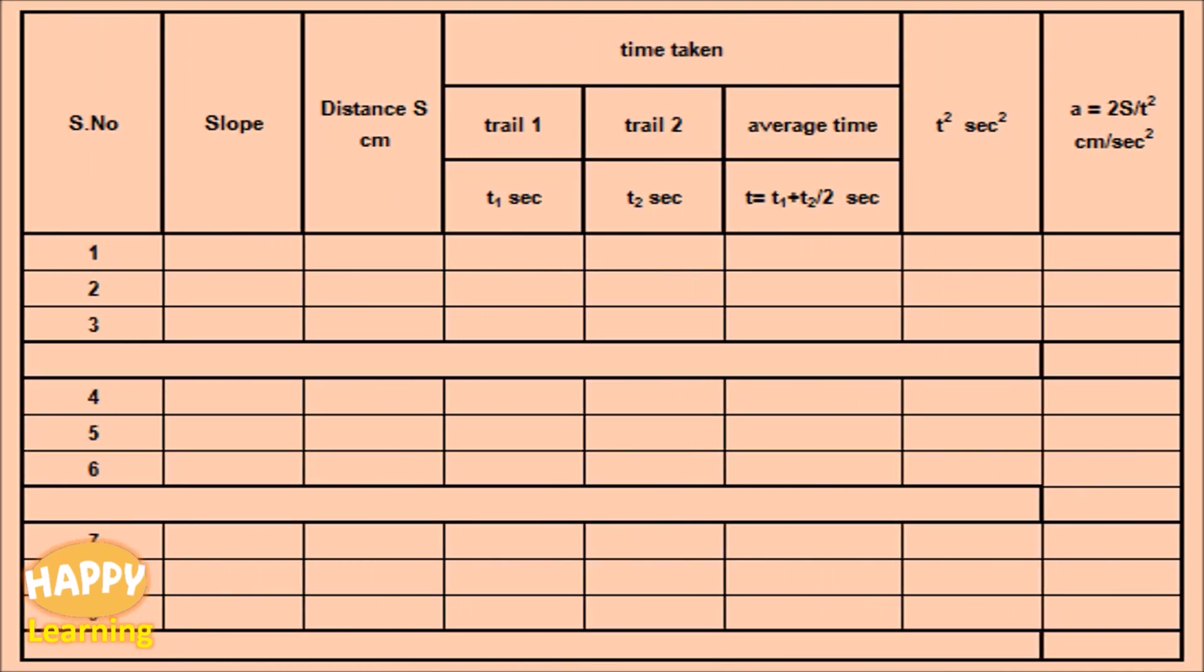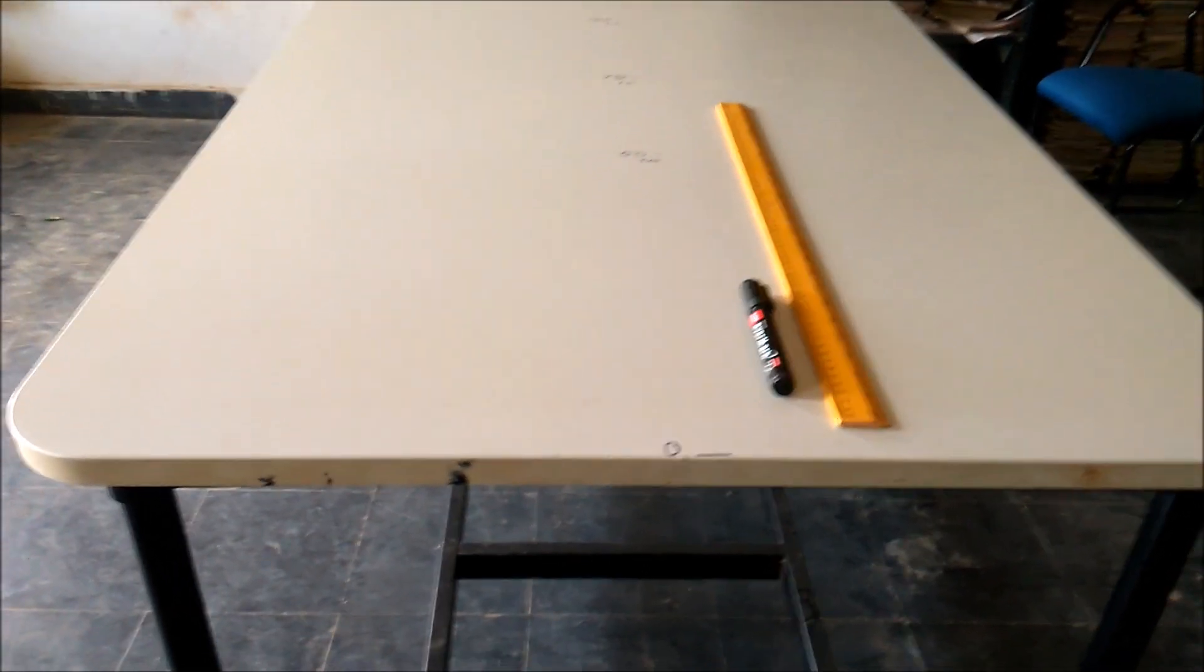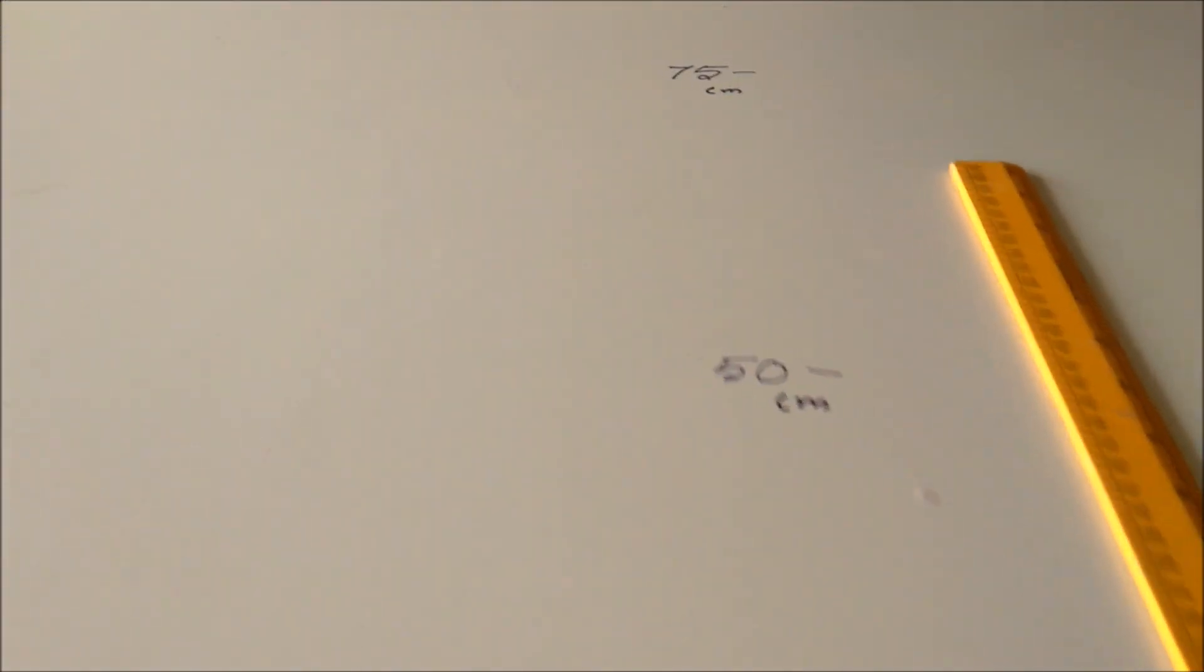This is the empty table that we are going to use. On the experimental bench, from one edge using scale and permanent marker, 0, 50 cm, 75 cm, 100 cm, 125 cm and 150 cm are noted.